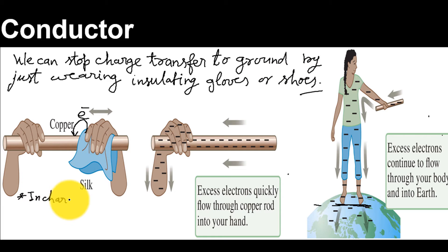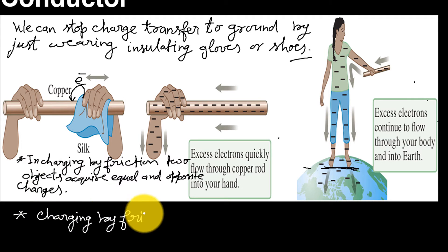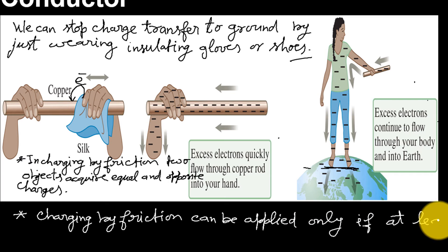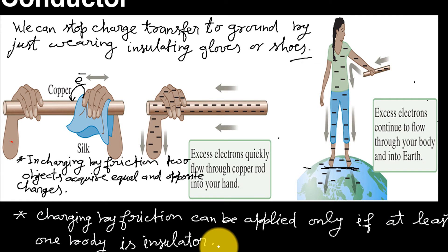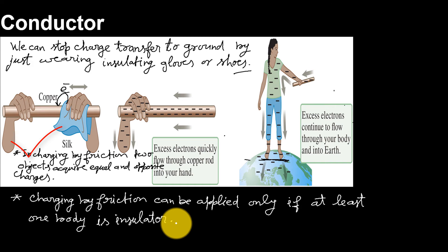So it is clear that in charging by friction, the two objects acquire equal and opposite charge. Second point: charging by friction can be applied only if at least one body is insulator.